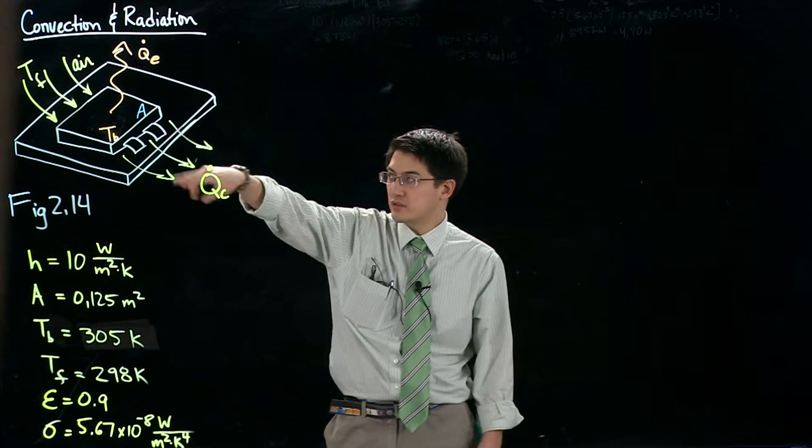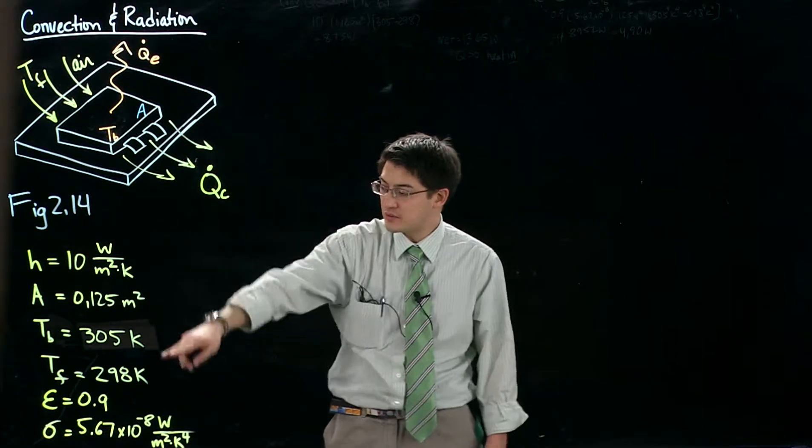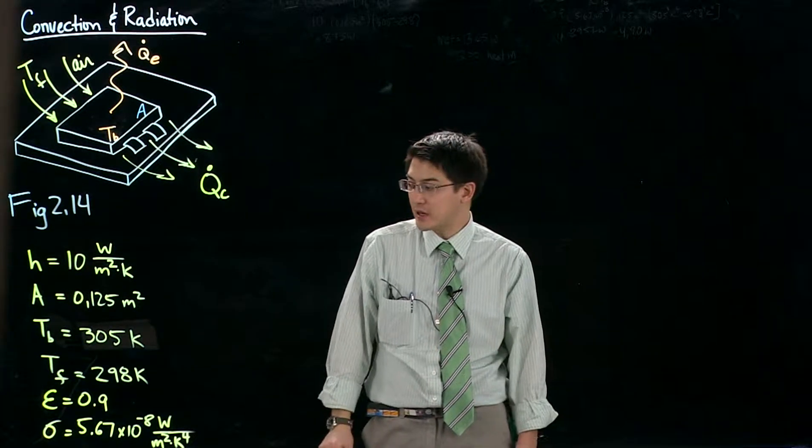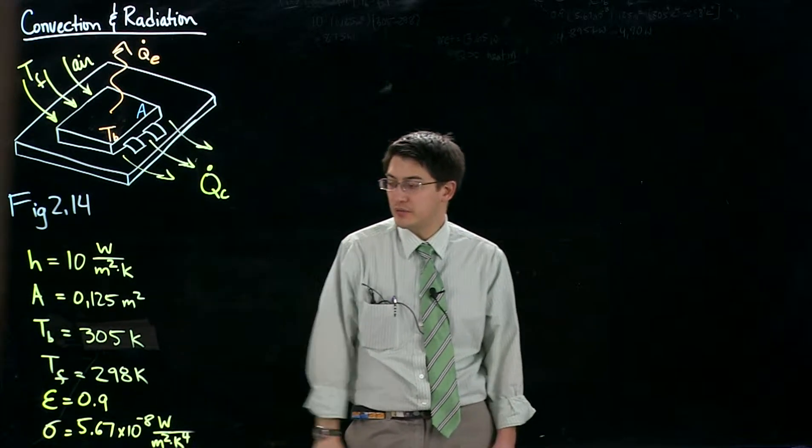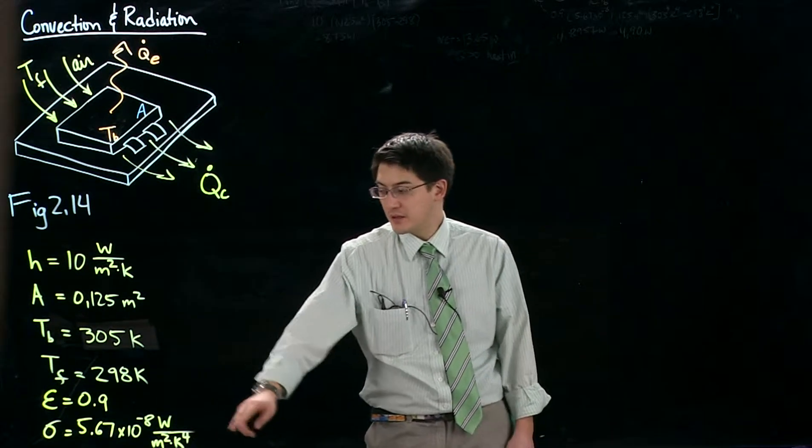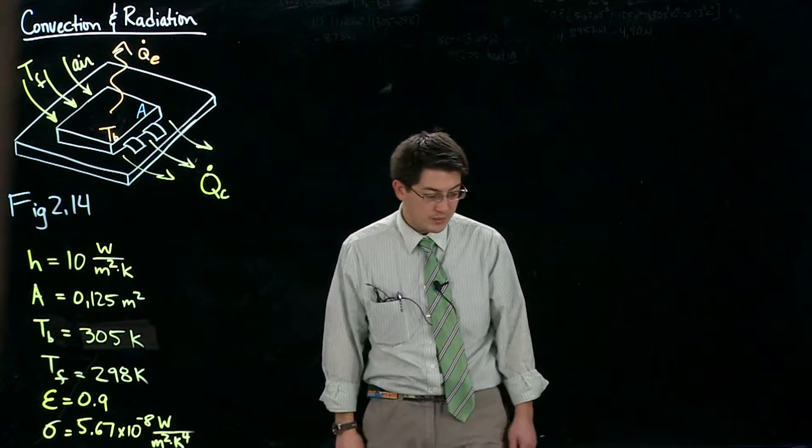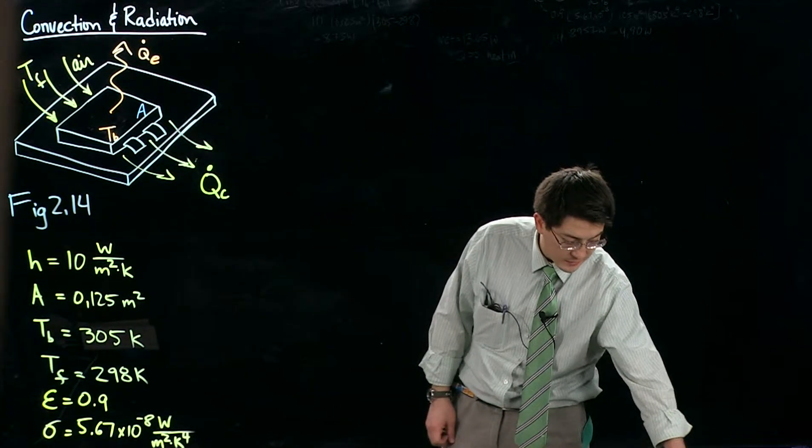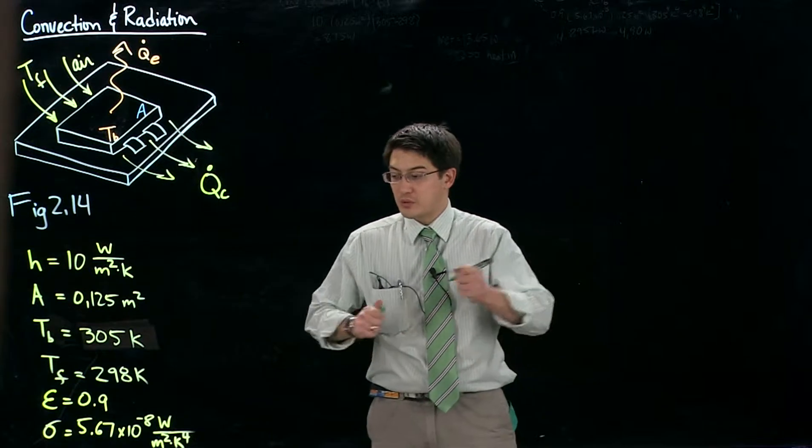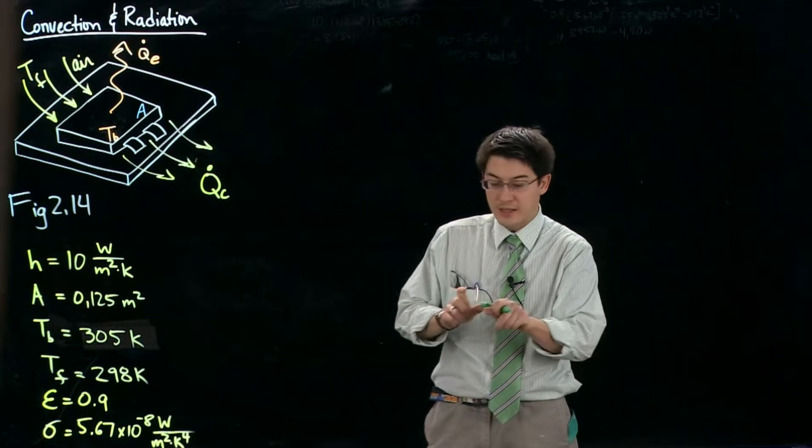The area of the surrounding air—I am sorry, the temperature of the surrounding air is 298 kelvin. The emissivity of the chip is 0.9, and the Stefan-Boltzmann constant is 5.67 times 10 to the minus 8 watts per square meter kelvin to the fourth.